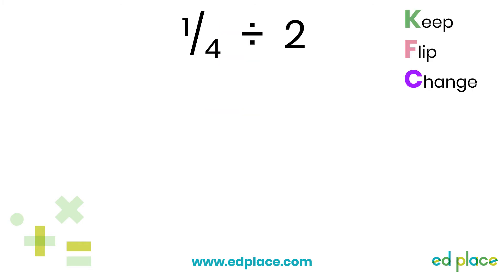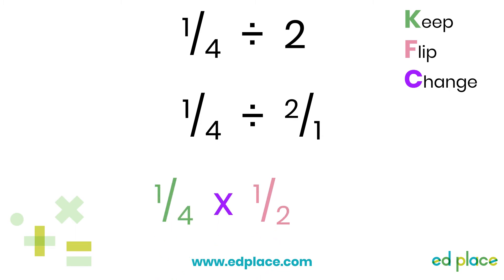Let's look at an example together: one-quarter divided by two. Remember, two is the same as two over one, so the question can also be written as one-quarter divided by two ones. Now we apply KFC: K — keep one-quarter the same; F — flip two ones to make it one-half; C — change the division sign to a multiplication sign. Now we can work out the answer: one-quarter times one-half. One times one is one, and four times two is eight. So the answer is one-eighth.